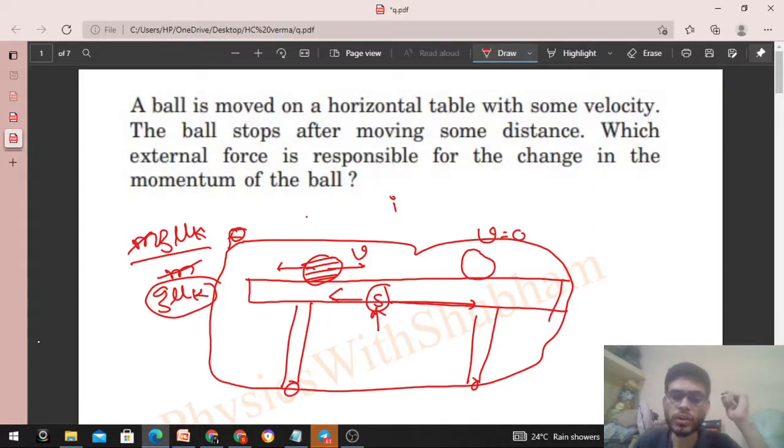Now let me know in the comments section what is that external force which is responsible for the change in momentum of the system. Initially is system ka ek momentum tha. Aap dekho, ball agar v velocity se move kar rahi thi, so initial momentum of the system was m into v. Or final momentum is system ka zero ho jayega, isn't it? Jab yeh ball after traveling some distance s yeh rest mein aa jaegi, so final momentum zero ho jayega.